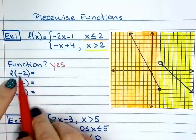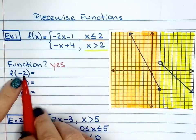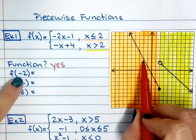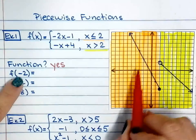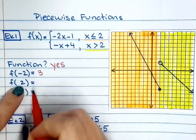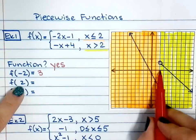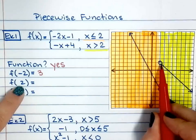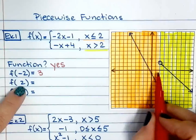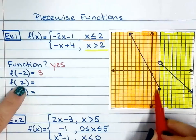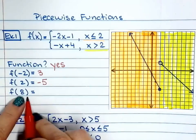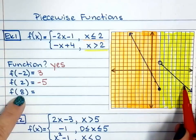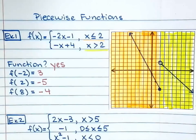What is y when x is negative 2? x is negative 2 right here — y is 3. What is y when x is 2? x is 2 right there. This one is open dot, so x is not really there, but the solid dot is. So y is negative 5. What is y when x is 8? x is 8 right there — y is negative 4.